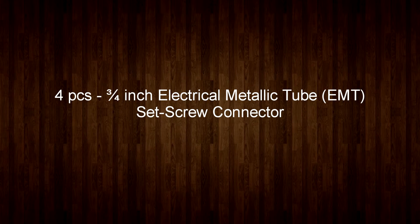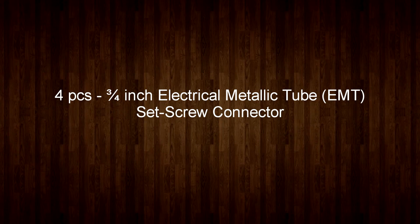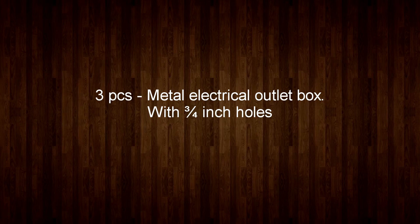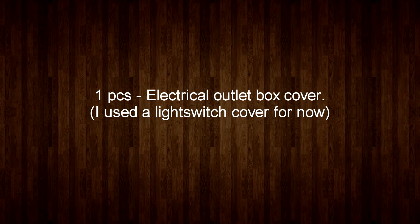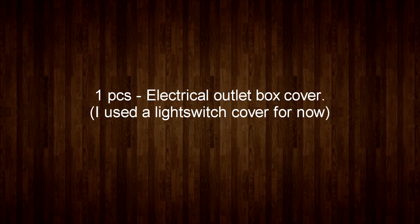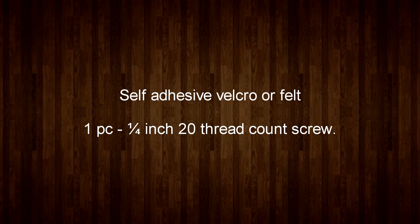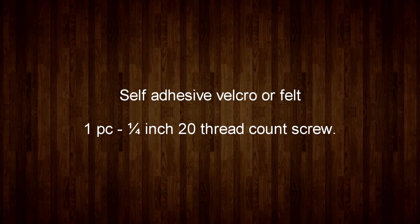Here's what you're going to need. Two pieces of three quarter inch conduit, four pieces of three quarter inch EMT (they usually sell these in a package of five), three electric outlet boxes with three quarter inch holes, one electric outlet cover or light switch cover, some velcro, and a quarter inch 20 thread count screw so you can screw your camera in on the mount.